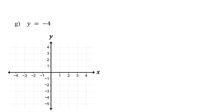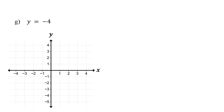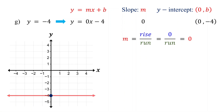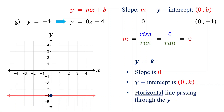Now let's see special cases. What if there is no x-term in the equation? We can write this in slope-intercept form as y = 0x − 4. From this, we can see that the slope is 0, and the y-intercept is (0, −4). Now, plot the y-intercept. A slope of 0 means there is no rise — the line doesn't go up or down. So when the slope is 0, the line is horizontal. Just draw a horizontal line that passes through the y-intercept. In general, if an equation is in the form y = k, where k is a constant, then the slope is 0, the y-intercept is (0, k), and the graph is a horizontal line passing through the y-axis at k.